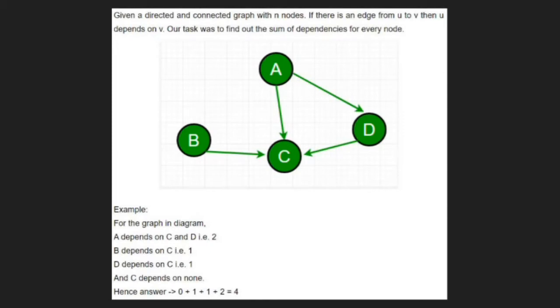So, the answer will be 0 plus 1 plus 1 plus 2 i.e. 4. Now, let us see the algorithm.